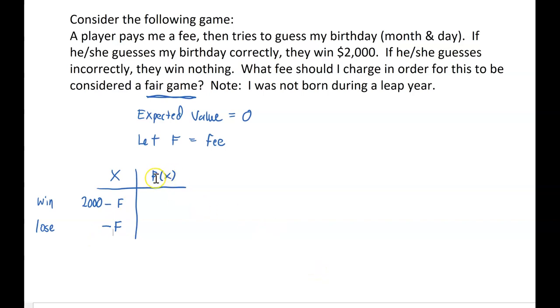Okay, now what is the probability that somebody is actually gonna win this game? Now the note was I'm not born during a leap year, which means there are 365 possible birthdays I might have. In a leap year, it'd be a little bit different because technically there'd be 366 potential birthdays for me. But if we all know I wasn't born during a leap year, then that means there are 365 possible guesses the player could make, and only one of those is my actual birthday. So the chance of winning this game is 1 out of 365.